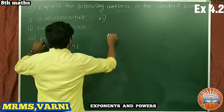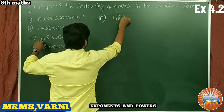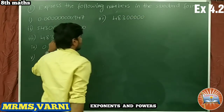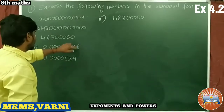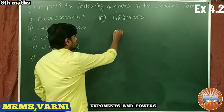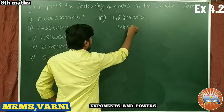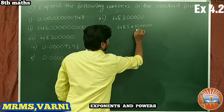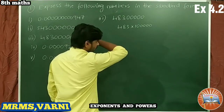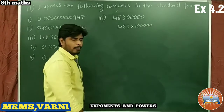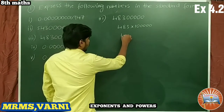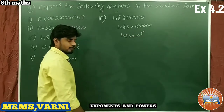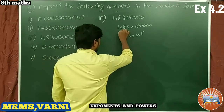Next, problem number 3: the number is 483 with 5 zeros — that is, 48,300,000. We can write this as 483 × 10^5.